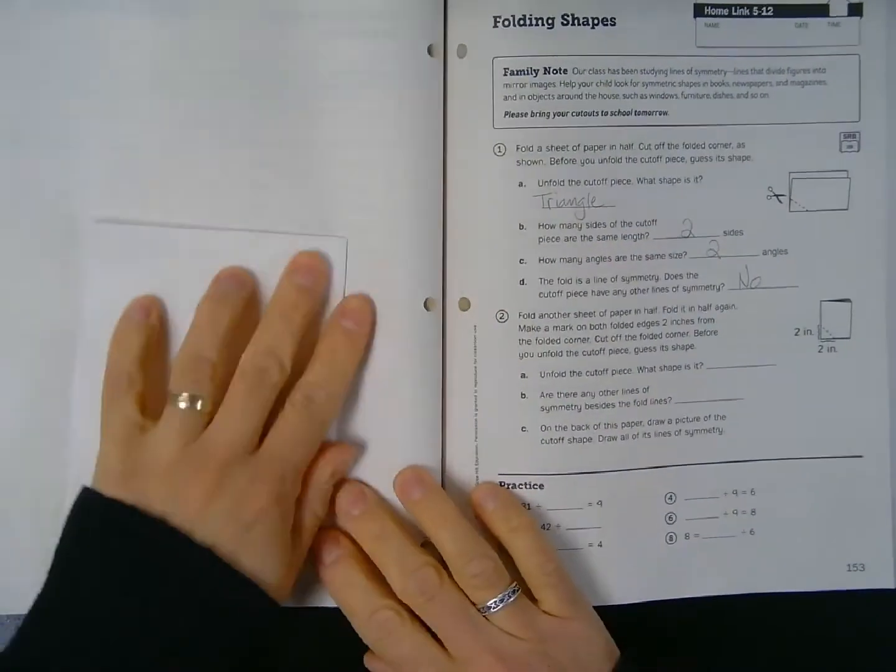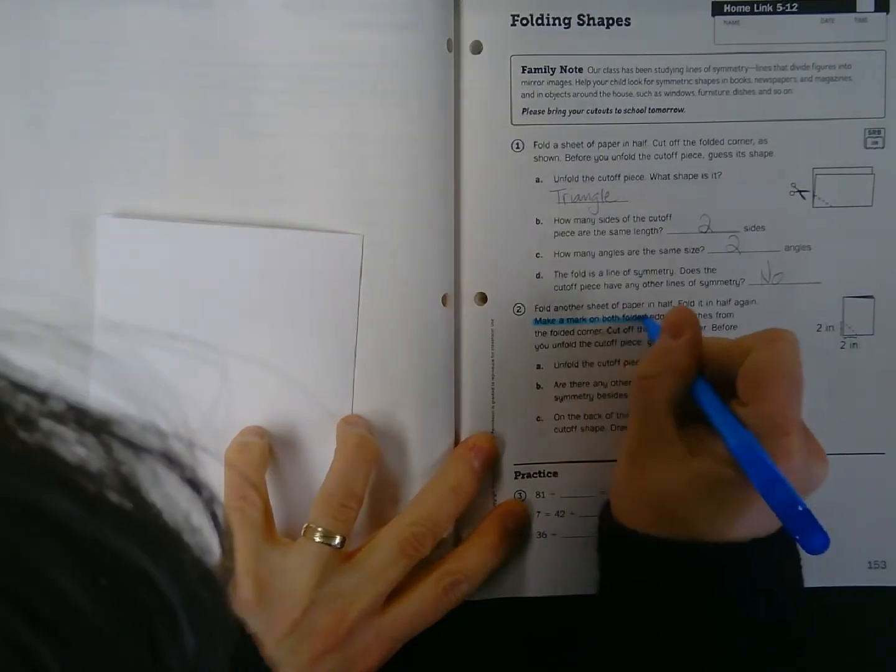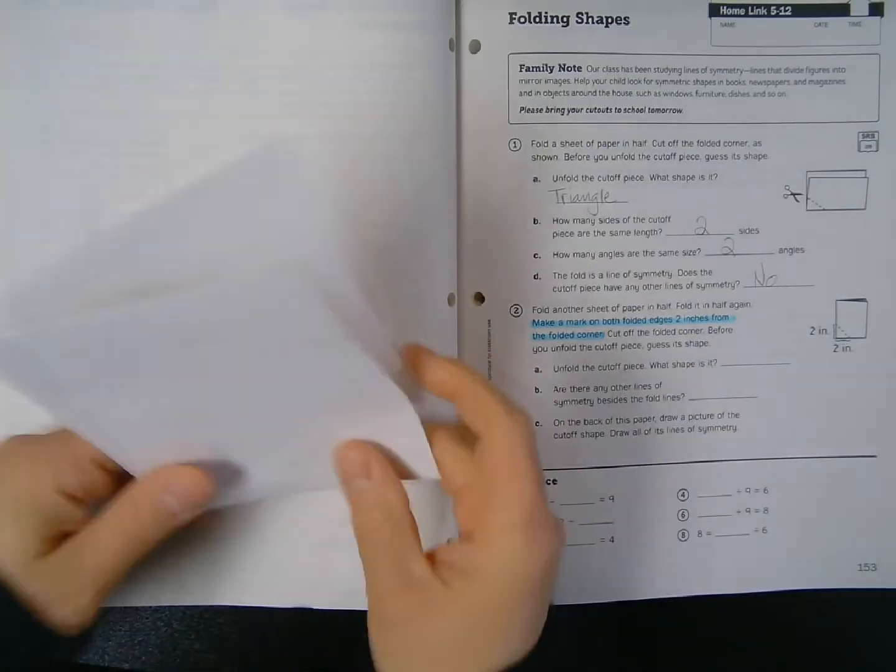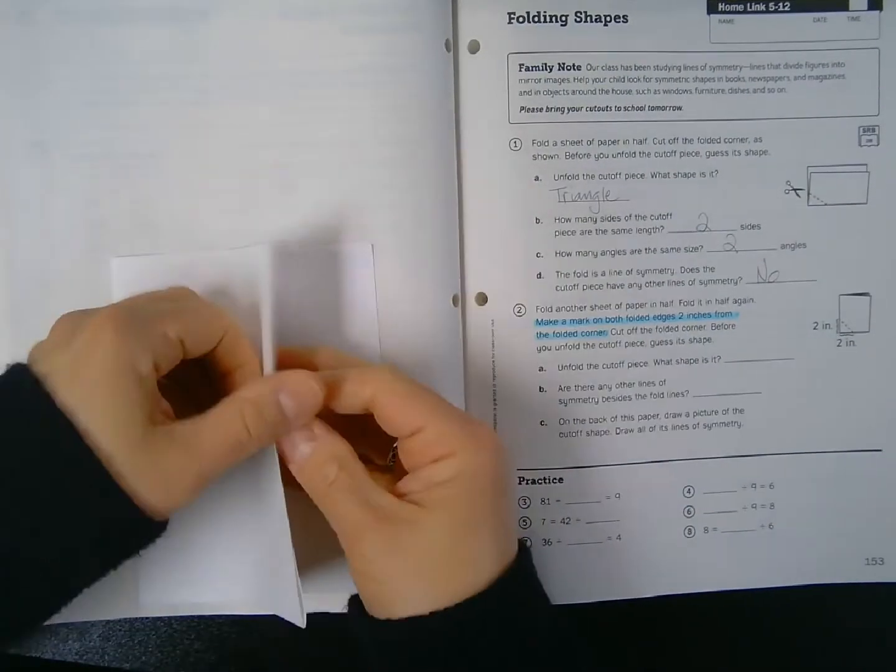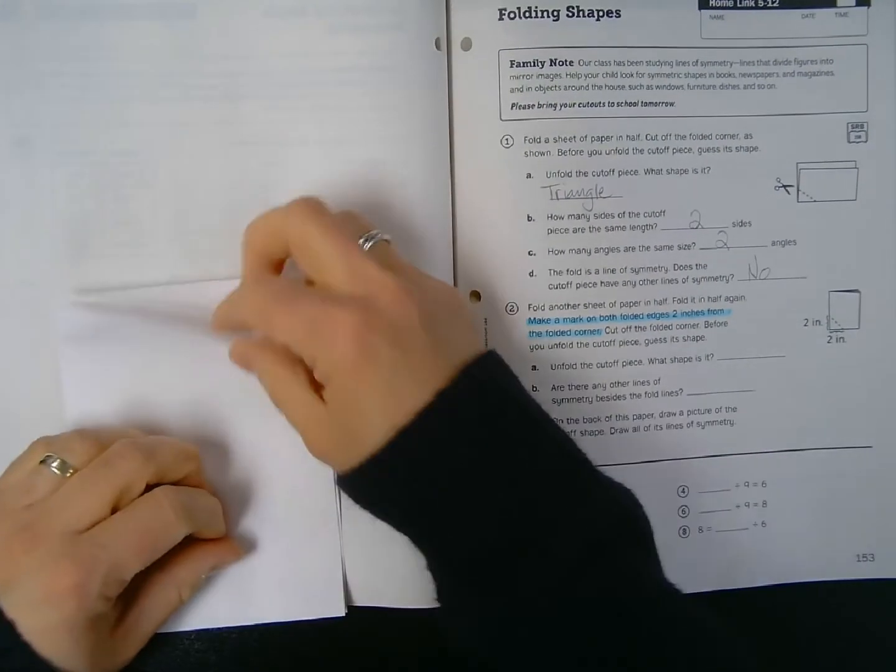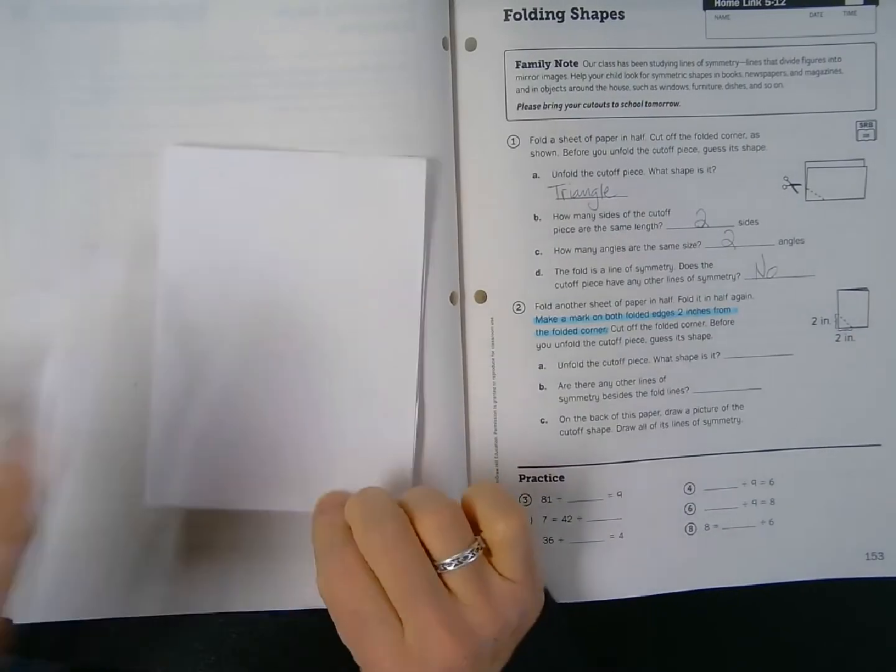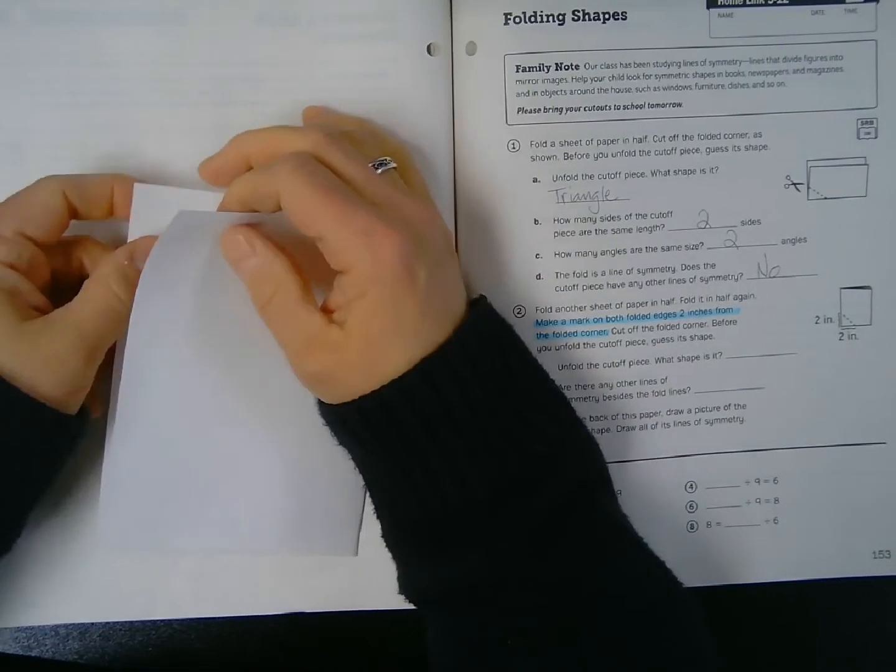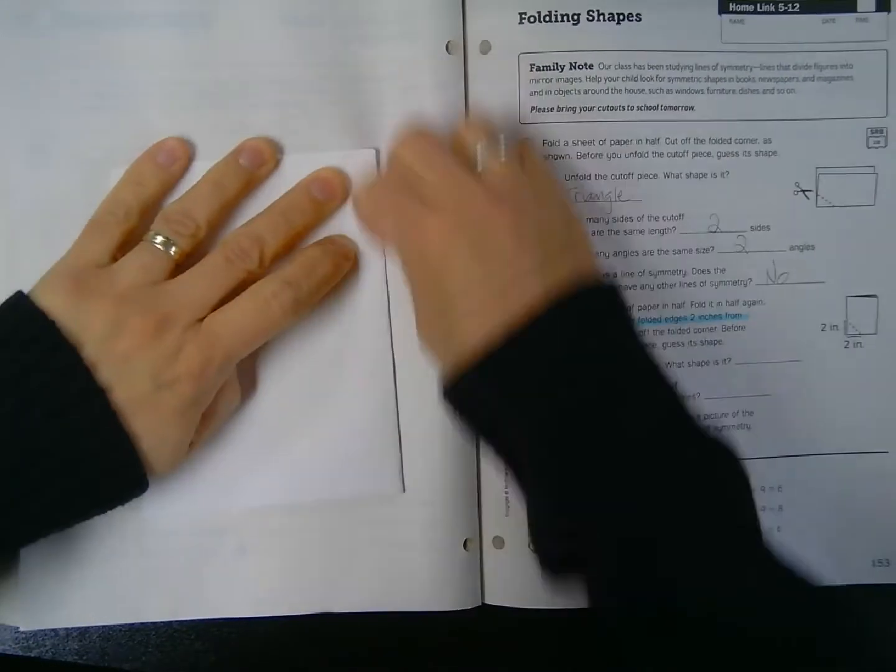So now what I have to do is I have to make a mark on both folded edges two inches from the folded corner. So again, I'm looking for folded edges. So this edge here, I can separate the paper. This edge here, I can separate the papers. Here and here are folded edges. Flip it over, the opposite's true. These are unfolded edges here and here. This is a fold, this is a fold. So I've got my two folded edges.